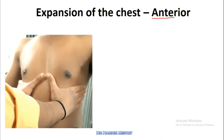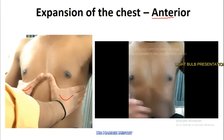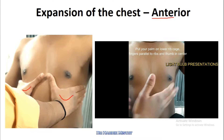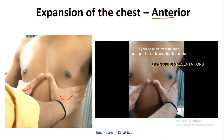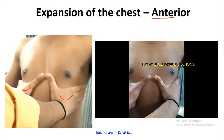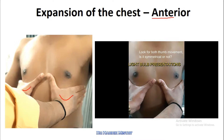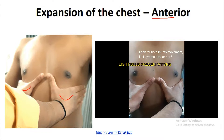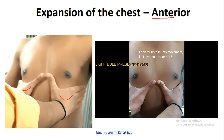Now, the expansion of the chest — first of all, anterior expansion as you are seeing in this photograph or video. First of all, rub your hands and put your palm over the anterior lower side of the chest walls, just like this. The fingers should be parallel to your ribs and the thumb should be present at the center. Tell your patient or subject to take a deep inspiration and expiration.